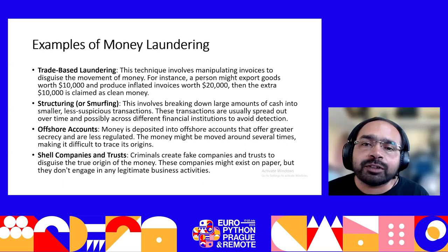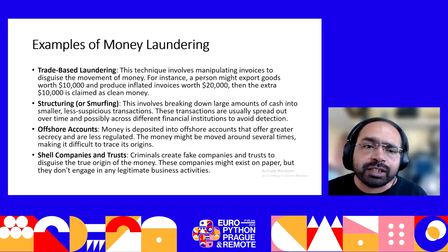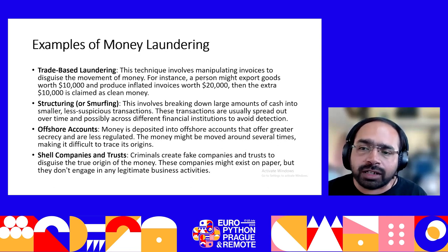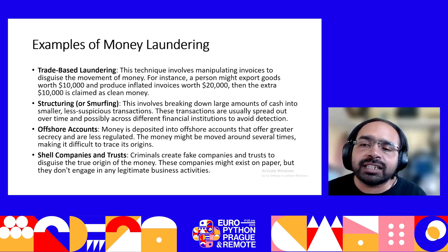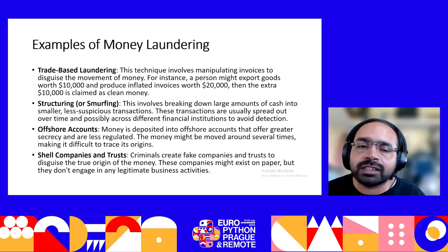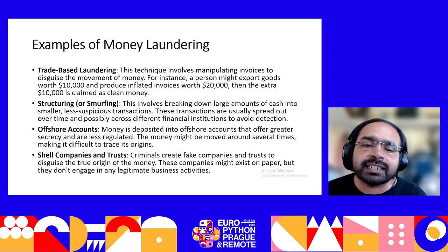Examples of money laundering include trade-based laundering, which involves manipulating invoices to disguise the movement of money. For instance, a person might export goods worth $10,000 but produce inflated invoices worth $20,000, and the extra $10,000 is claimed as clean money. The next is structuring, also known as smurfing — breaking down large amounts of cash into smaller, less suspicious transactions spread out over time and possibly across different financial institutions to avoid detection. Our solution focuses on the structuring problem. There are also offshore accounts, where money is deposited into accounts offering greater secrecy and less regulation, making it difficult to trace origins.